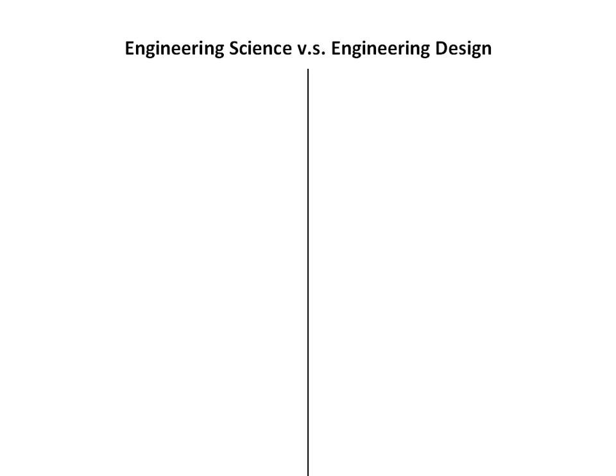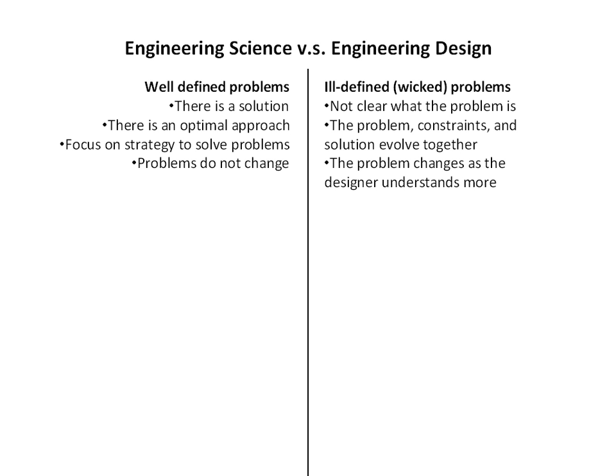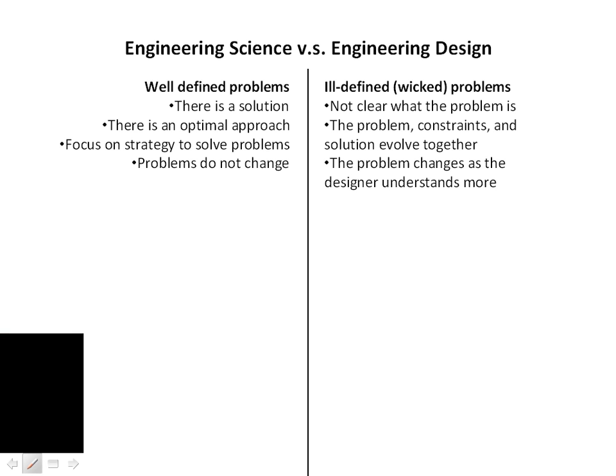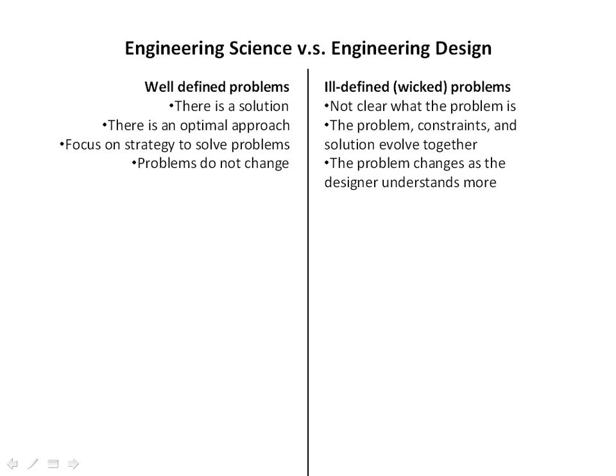Let's do a couple of comparisons between engineering science and engineering design, so we've got a good idea of how a design class may differ significantly from the engineering science class that many students are used to. First of all, in engineering science, we have well-defined problems. There's always a solution — you always expect there to be a solution when you're given the problem.